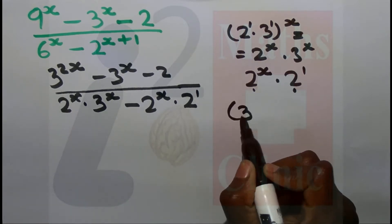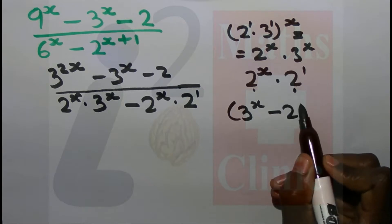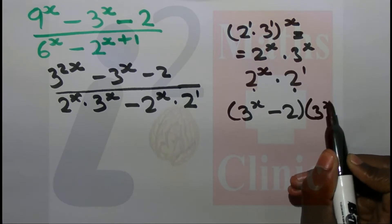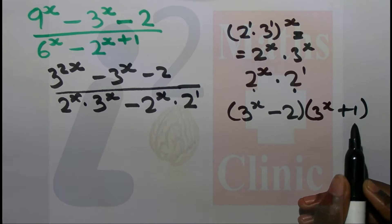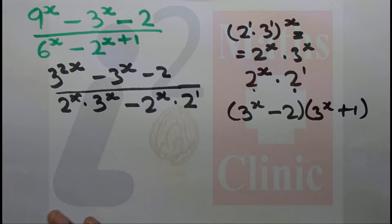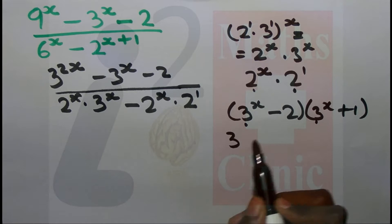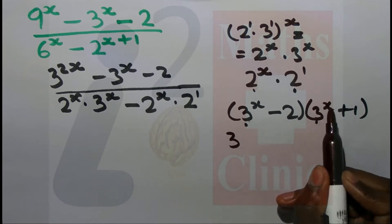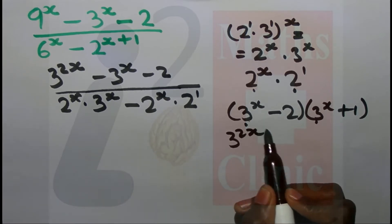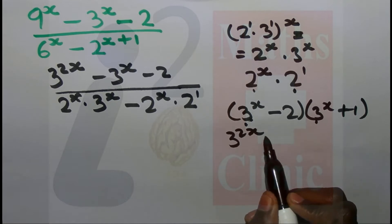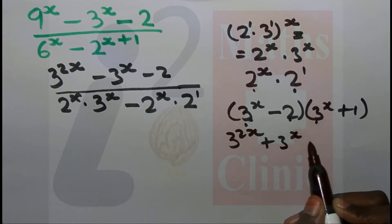3 to the x minus 2. When you bracket: 3 to the x plus 1. Must multiply quickly, so this gives 2 to the x minus 2 to the x minus 3 times 2 to the x minus 2. So x plus x gives 2x, and then 3 times 1 gives 3 to the x, positive.